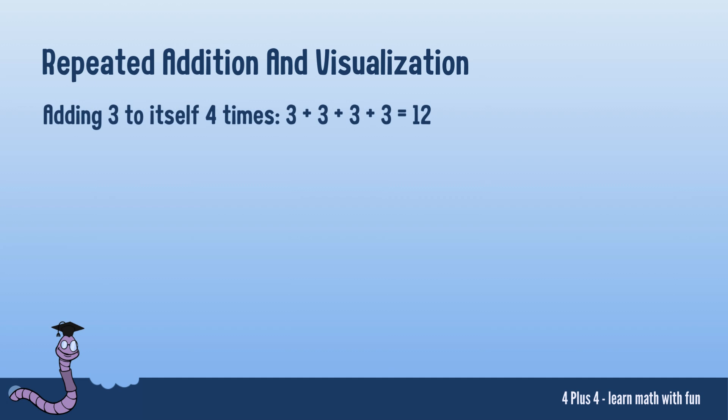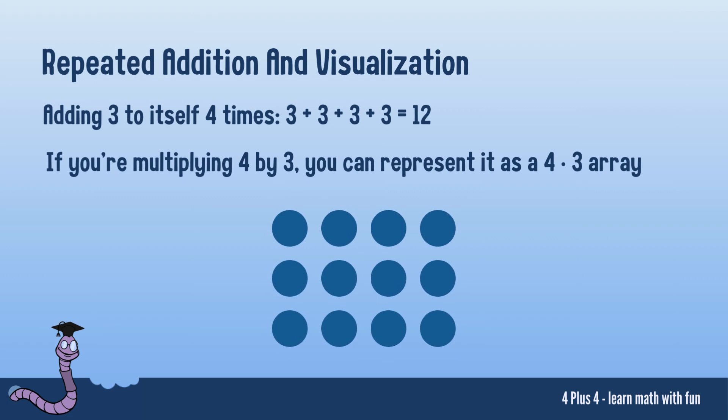To make multiplication even more understandable, you can use arrays. An array is a grid of rows and columns. If you're multiplying 4 by 3, you can represent it as a 4 by 3 array. In this case, your array will have 12 elements, exactly like the result of your computation. This visual representation can help solidify the concept.